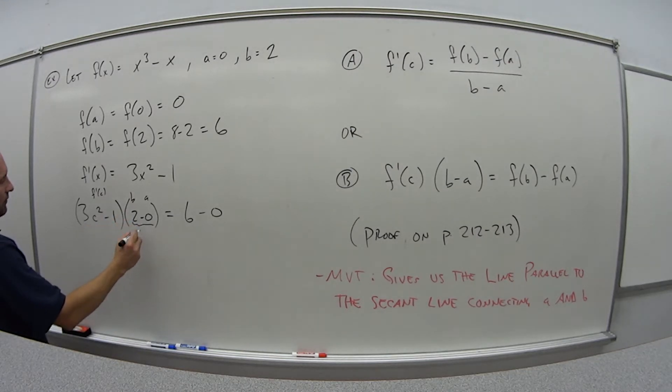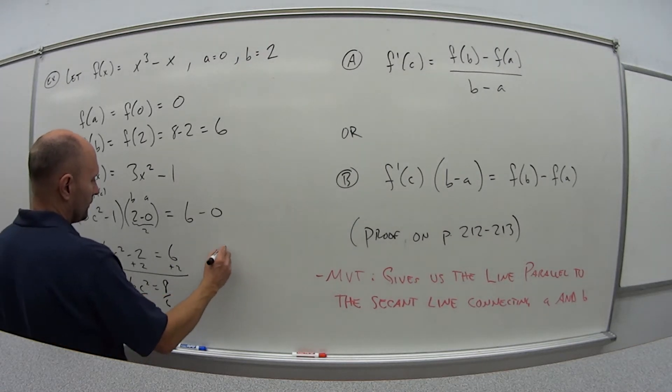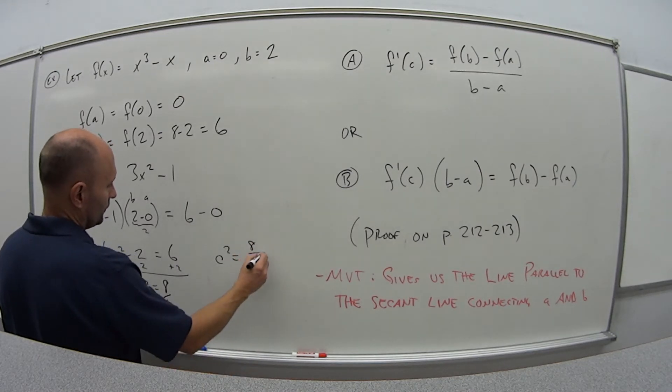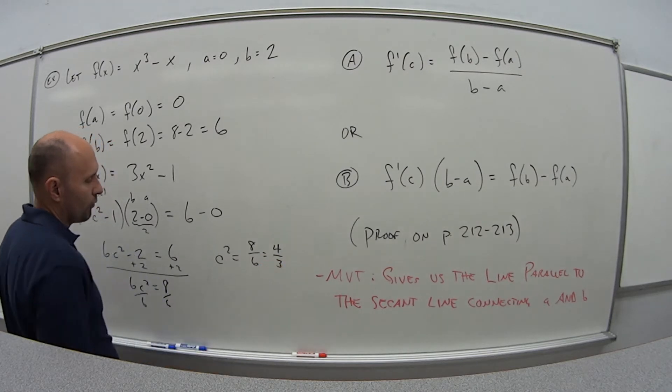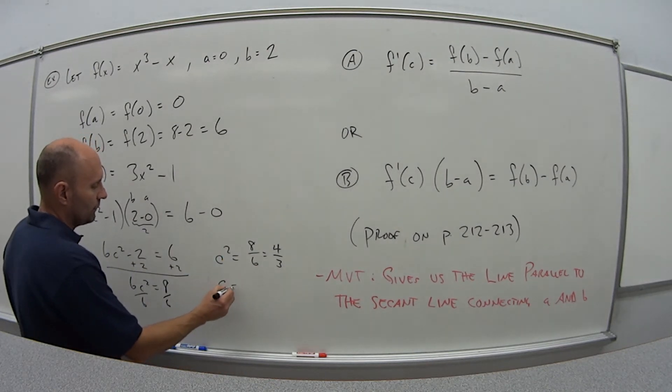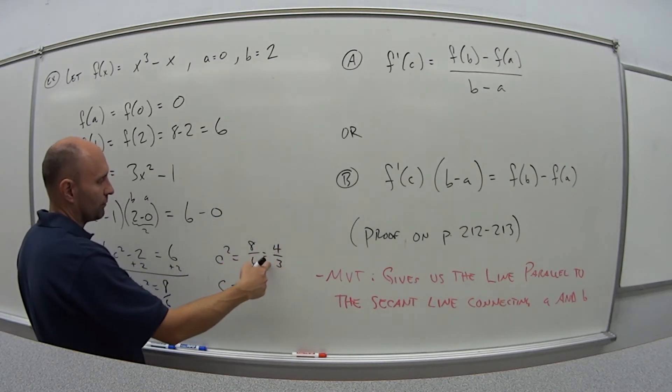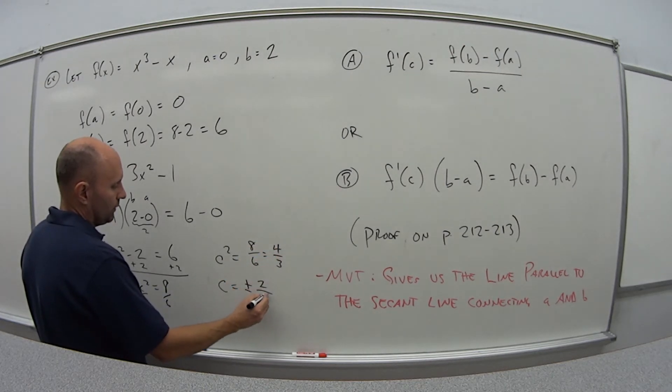Now I just need to simplify and solve for c. 2 minus 0 equals 2. If I distribute 2 here, 3c² times 2 is 6c². And 2 times negative 1 is minus 2 equals 6 minus 0 is 6. So now solve for c. Add 2 to both sides: 6c² = 8. Divide both sides by 6: c² equals 8/6, which simplifies to 4/3. But that's c squared. So if I take the square root of both sides, c is plus or minus the square root of 4/3, which is ±2/√3.